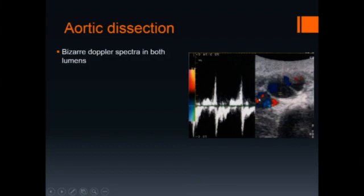If Doppler spectra are obtained from the false and true lumens, a bizarre spectrum may be seen. In this case, there is a dissection flap seen within the abdominal aorta on this transverse image. A spectrum is obtained that is bizarre and does not resemble any physiologic aortic waveform.